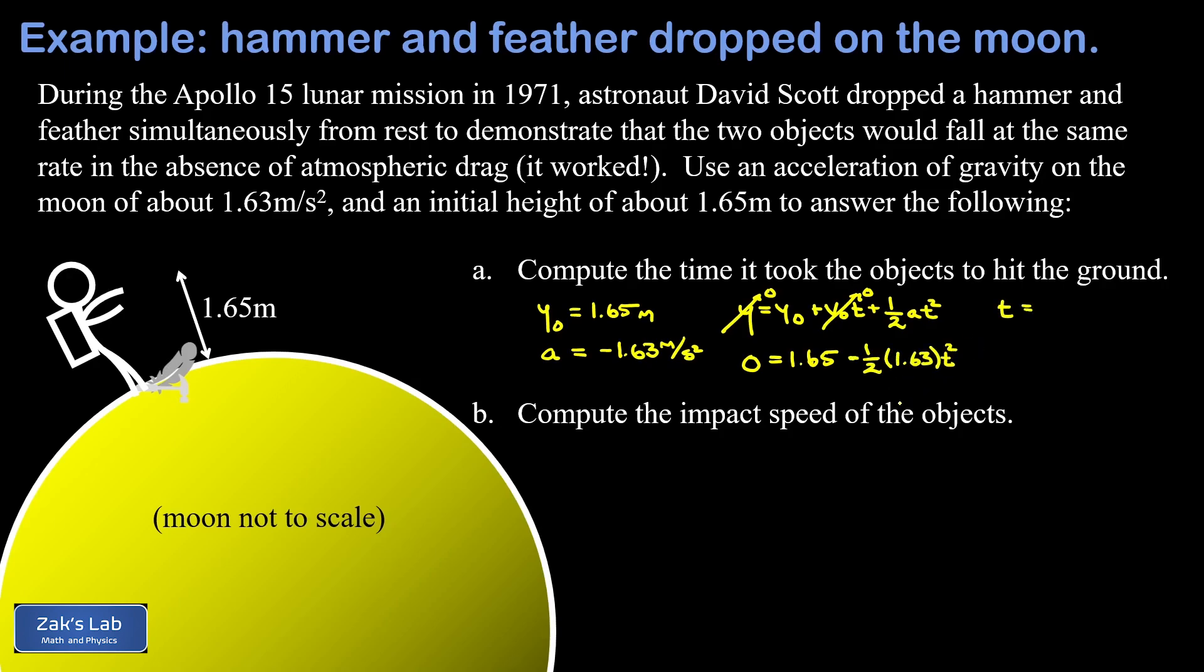We can solve for t all at once in our calculator. All we do there is subtract the 1.65 from both sides, multiply the result by negative two, divide by 1.63, and then square root the result. When we do this, we find that t to three significant digits is 1.42 seconds.